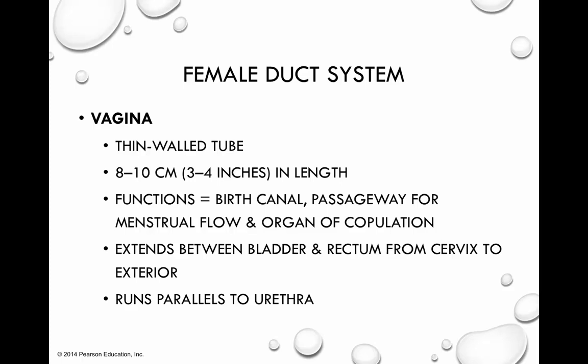Continuing down the female duct system from the uterus, we reach the vagina. The vagina is a thin-walled tube about 8 to 10 centimeters, or 3 to 4 inches, in length. Its overall function is to act as the birth canal, as a passageway for menstrual flow, and as the organ of copulation for the female reproductive system — designed to receive the penis during sexual intercourse and to receive sperm so it can make its way to the oviduct for fertilization.